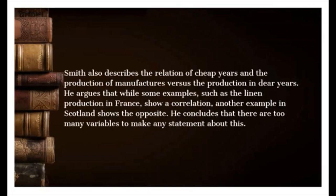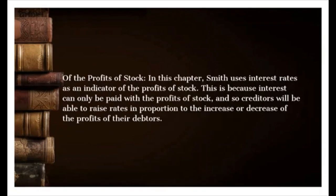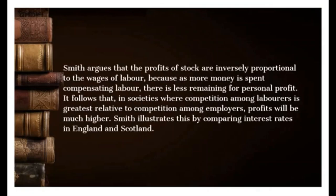Smith describes the relation of cheap years and the production of manufactures versus dear years. He argues that while some examples, such as linen production in France, show a correlation, another example in Scotland shows the opposite, concluding there are too many variables to make any definitive statement. Of the profits of stock: Smith uses interest rates as an indicator of profits of stock, since interest can only be paid with the profits of stock, and creditors will raise rates in proportion to the increase or decrease of the profits of their debtors.